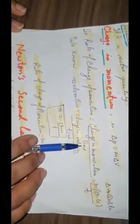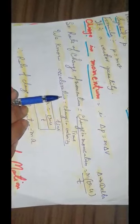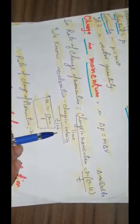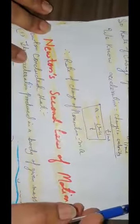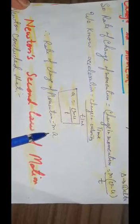Rate of change in momentum is equal to change in momentum upon time, or M times V minus U upon time. We know acceleration is equal to change in velocity upon time, that is V minus U upon T. So rate of change of momentum is equal to M into A.